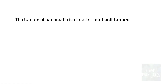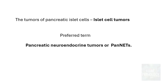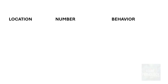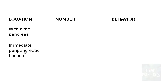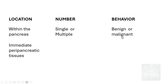The tumors of pancreatic islet cells are called islet cell tumors, but the preferred term is pancreatic neuroendocrine tumors — in short, PAN-NETs. These PAN-NETs account for around 2% of all pancreatic neoplasms. In terms of location, they are most often seen within the pancreas, but can also be seen in immediate peripancreatic tissues. They can be single or multiple, and can behave as benign or malignant neoplasms. Fortunately, the majority of them are benign.